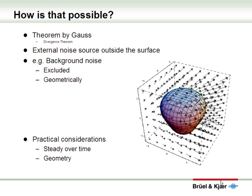How is this possible? There's a theorem by Gauss which explains it: all the sound energy inside the spherical surface is measured and added together, but all sound originating from outside that surface will be excluded geometrically. The reason is that sound waves enter the volume with a negative sign on one side and leave with a positive sign on the other, and these signs cancel if you measure accurately enough. There are practical considerations: the situation should remain steady over time, and the geometry must be complete.